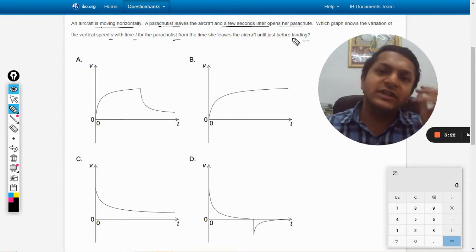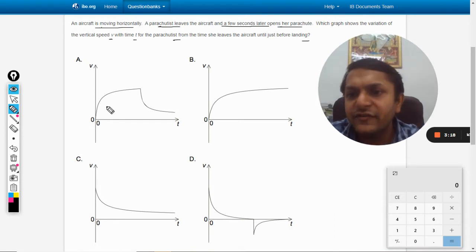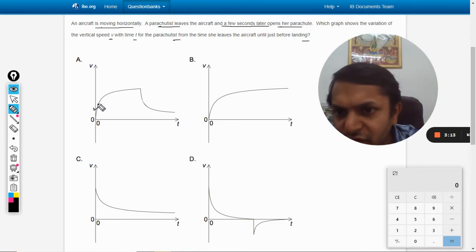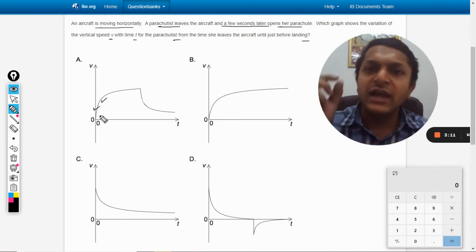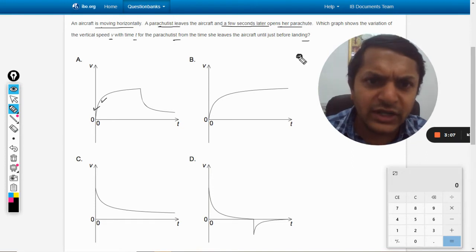It will be constant because there is drag. First of all, the velocity should increase. Let's go for option A. The velocity will increase because acceleration due to gravity will happen. Try to imagine a body here.